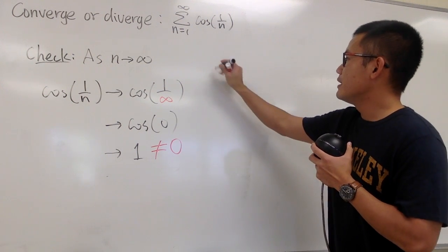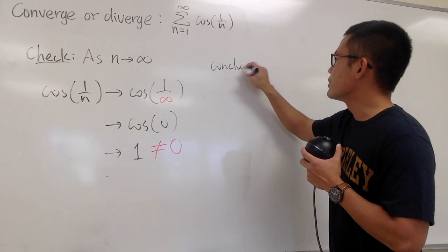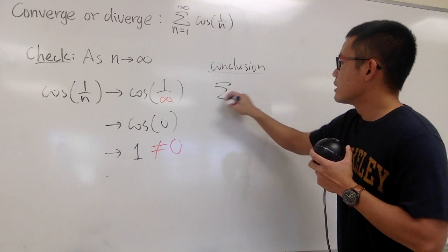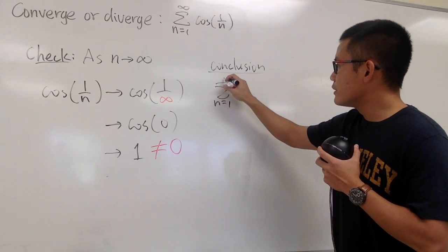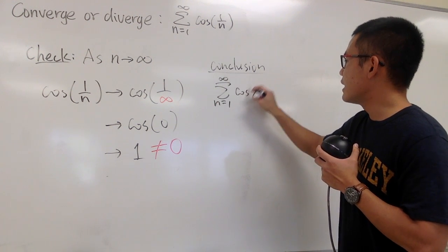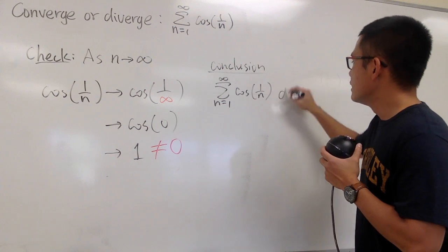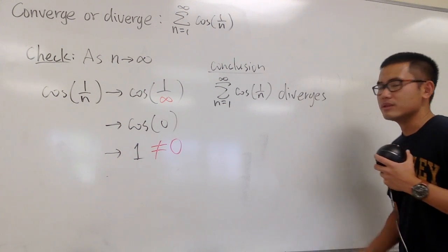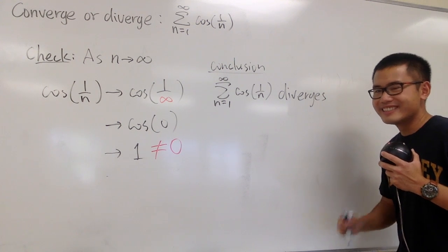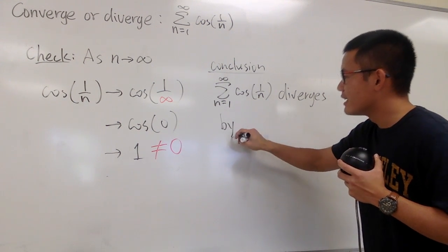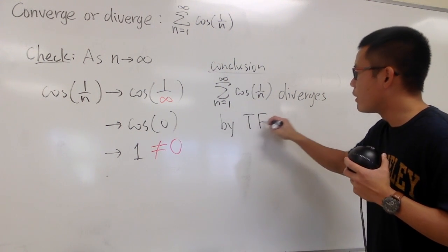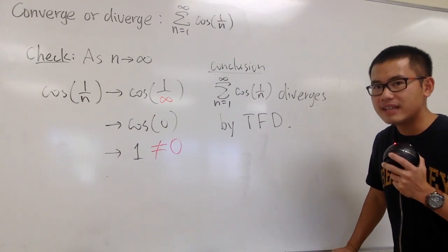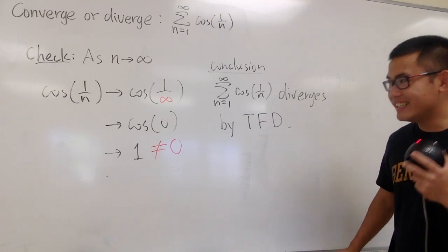So, here is the conclusion. We are going to say that the series of n goes from 1 to infinity, cosine of 1 over n, this right here diverges. And let me spell it out, because this right here is so cool. This right here diverges by the test for divergence. By the test for divergence. That's it.